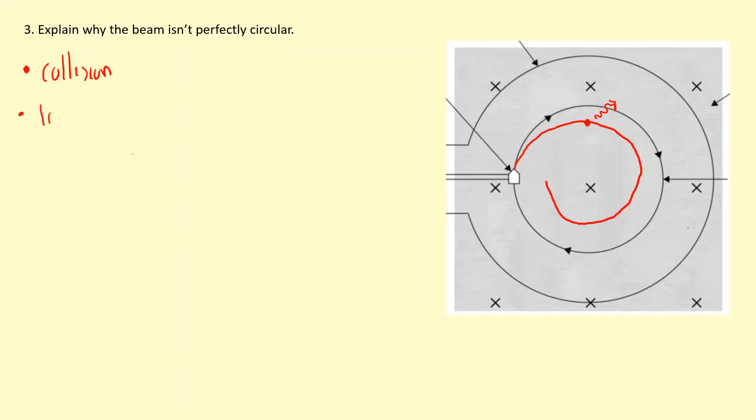If it loses KE, using the equation Bqv equals mv squared over r, if I rearrange this to give r as the subject, you can see that the radius is proportional to the velocity. So as the velocity decreases, the radius also decreases.